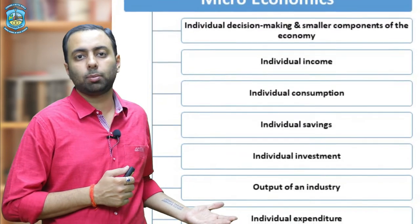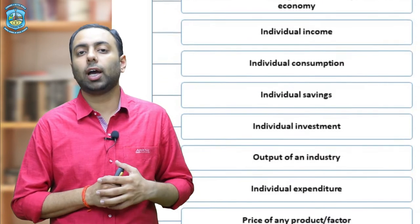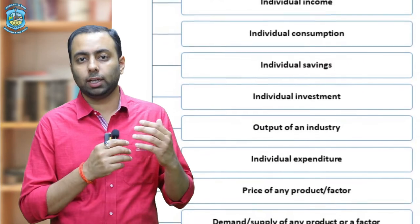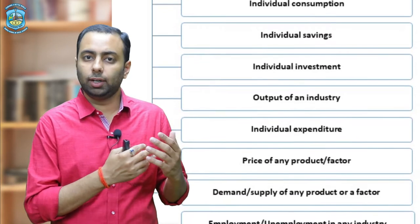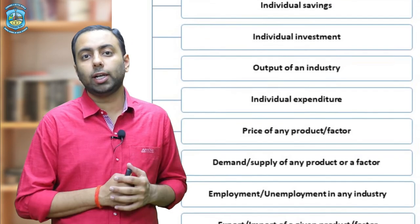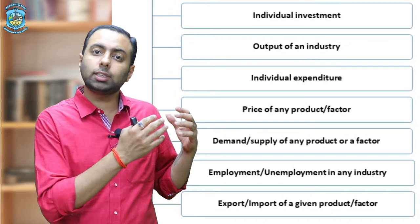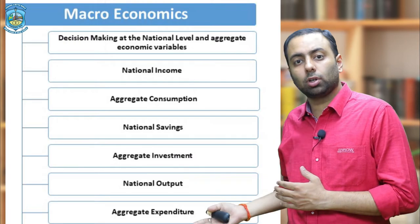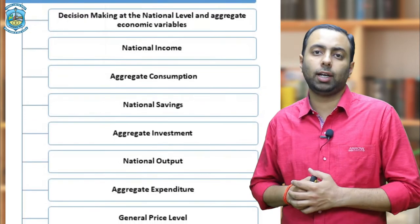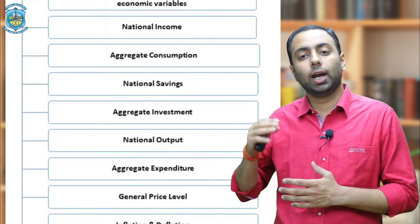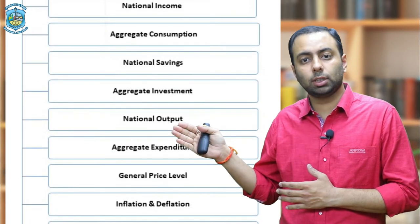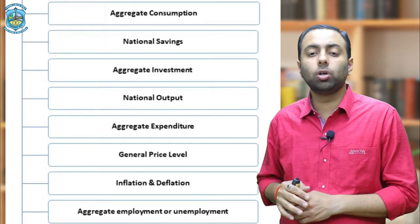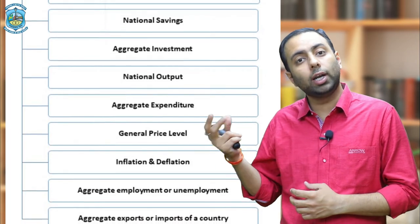The branches of economics are classified into two categories. Microeconomics talks about the aggregates of a household or an individual person — individual income, individual consumption, individual saving, individual investment, product pricing, and output of an industry. On the other side, macroeconomics talks about decision-making at the national level: national income, aggregate consumption, national saving, national output, and not a particular industry but the whole industry.